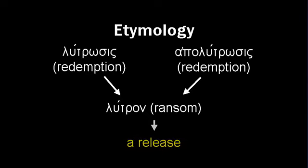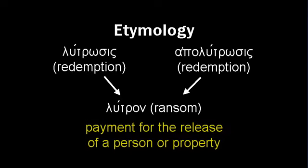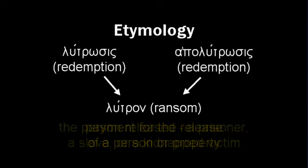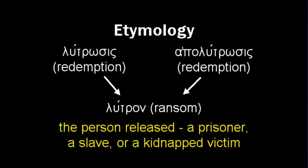Lútrōn is usually translated as ransom. It is a payment for the release of a person or property. The person released by the payment may be a prisoner, a slave, or a kidnapped victim. It may be bail posted, a fine paid to release a person from prison, money paid to free a slave, or money paid to free a kidnapped victim.